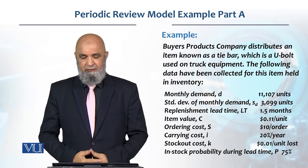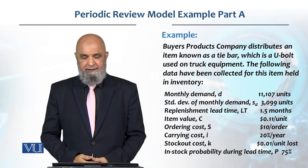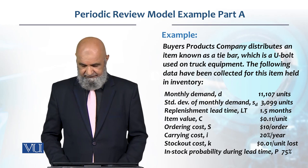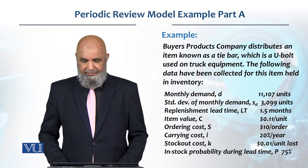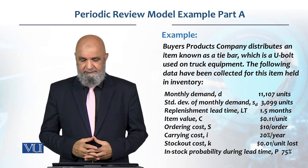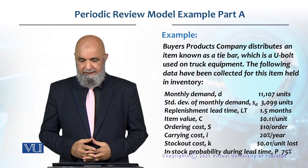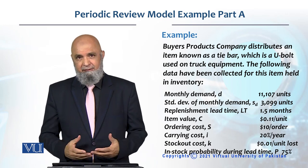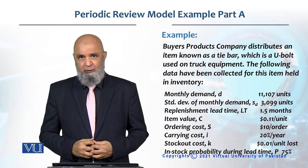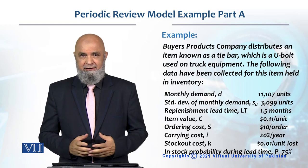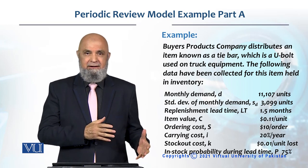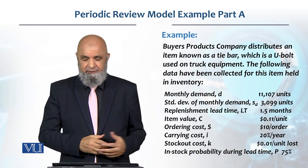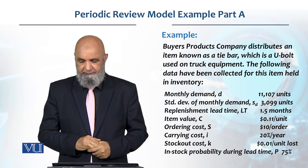Let's solve an example of a periodic review model. There is a company which distributes — I'm going to solve a problem, but that was for a continuous review system, that is the ROP (reorder point) system.